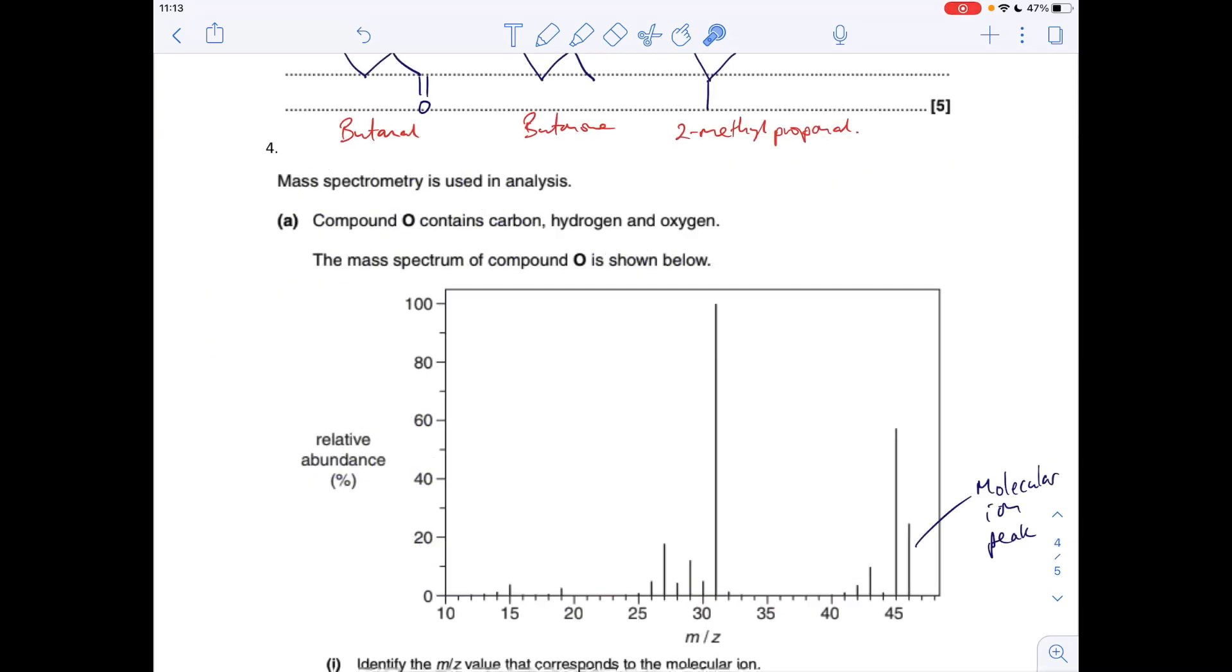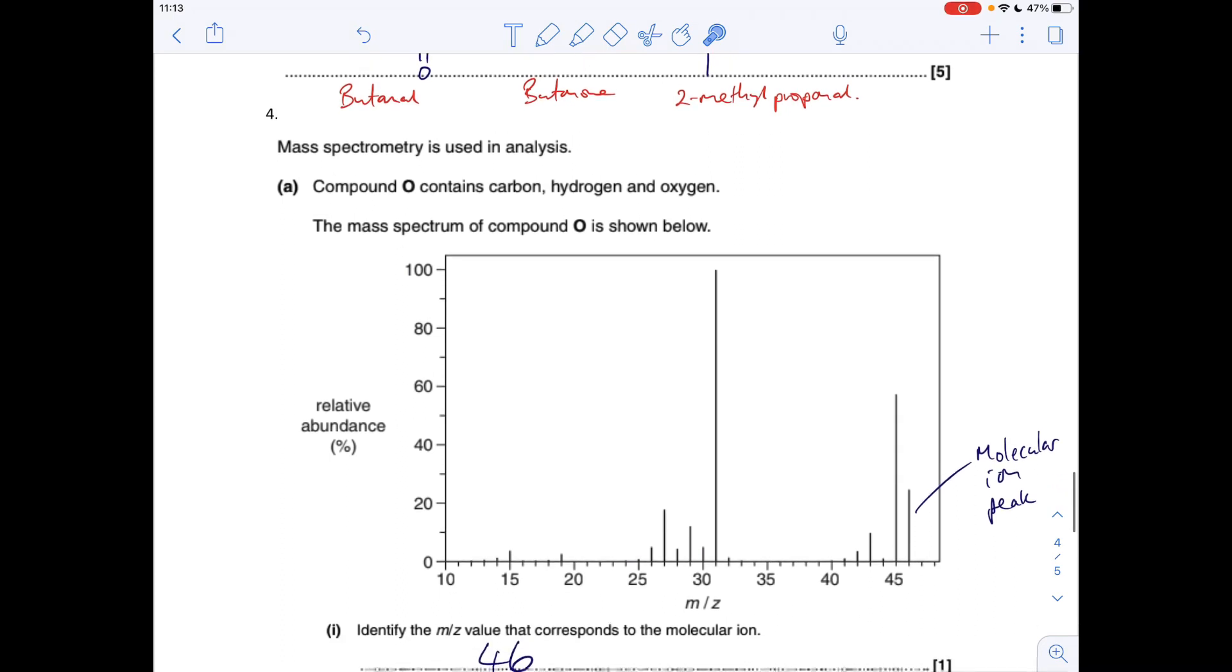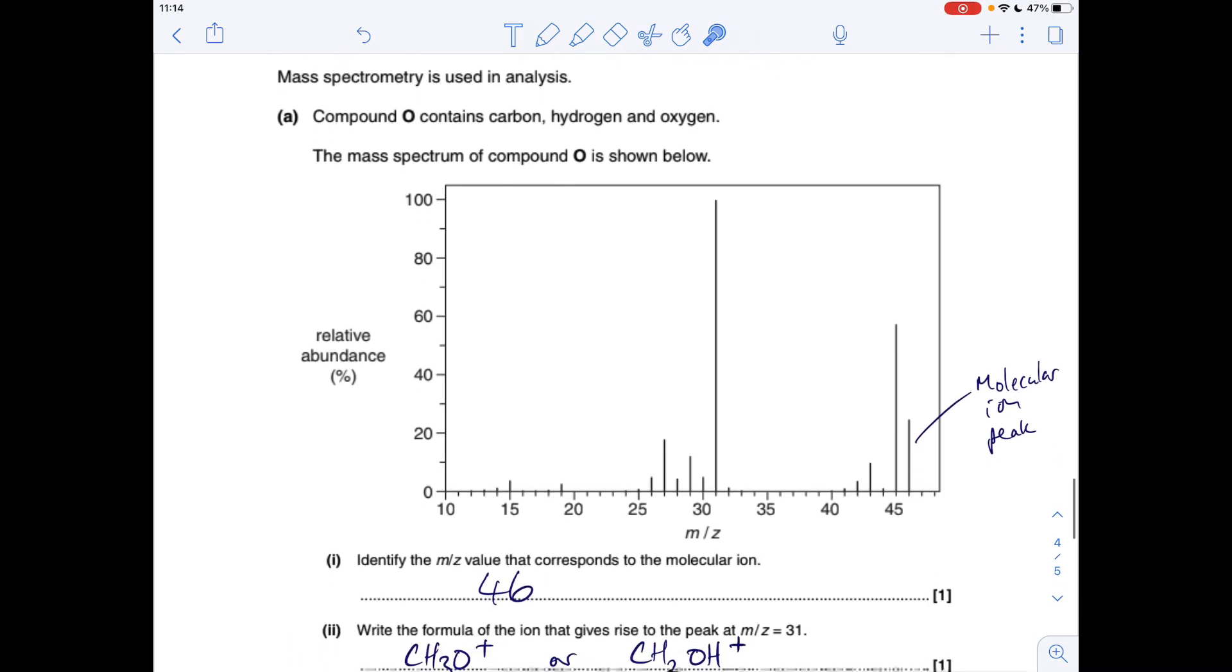Okay, so moving on, the final question there we've got basically a mass spectrum of compound O. We're told it contains carbon, hydrogen, oxygen, and the question's identify the M over Z value that corresponds to the molecular ion. Remember the peak furthest to the right is the molecular ion peak, so that's at M over Z 46. So that's the answer there. Write the formula of an ion that gives rise to the peak at M over Z 31.